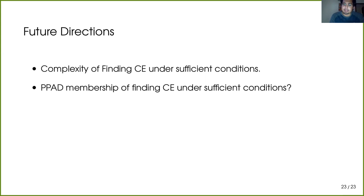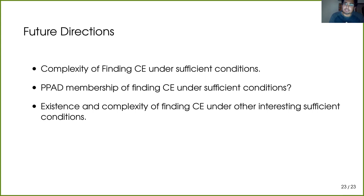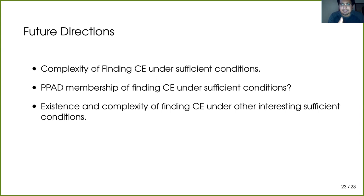We also want to investigate existential and computational questions under other interesting sufficient conditions. For instance, when all disutility values between agents and chores are finite — no infinite disutilities — existence is easy to show, but does the problem become easier computationally? Is there a polynomial-time algorithm, or is it PPAD-hard? These are all interesting open questions, and with that I conclude my talk. Thank you for listening.